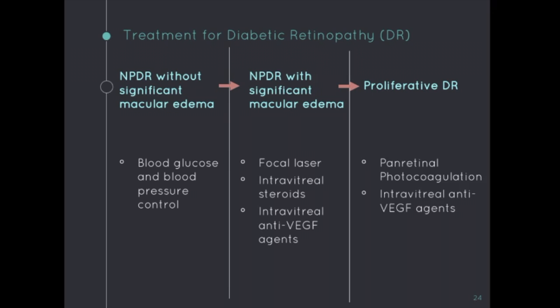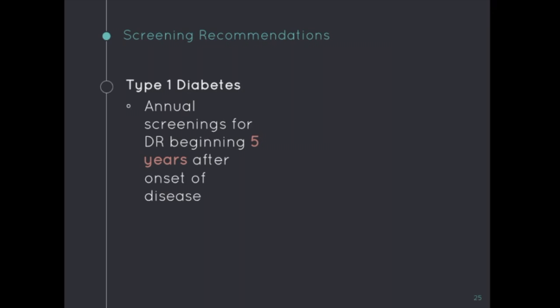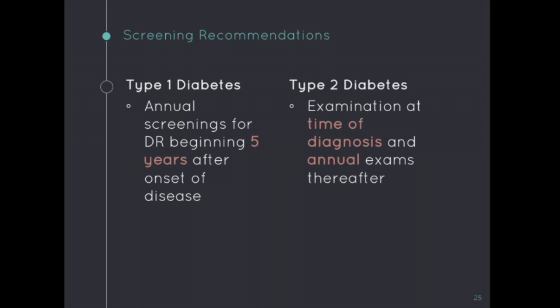In terms of screening, the AO recommendations for type 1 diabetes are annual screenings for DR beginning five years after onset of disease. For type 2 diabetes, the patient would be examined for DR at the time of diagnosis and then annual exams thereafter.